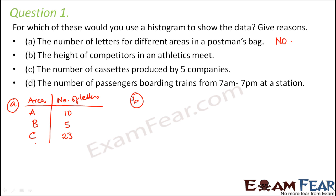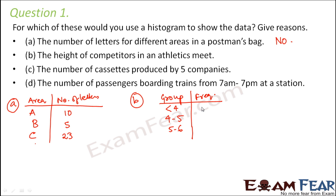Scenario B: height of competitors in an athlete's meet. Athletes will all have different heights — some might be five feet, six feet, or 6.1 feet. You can create groups such as less than four feet, four to five, five to six, and count how many athletes fall in each range. This gives a grouped frequency distribution, so a histogram can be used here.